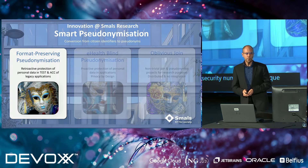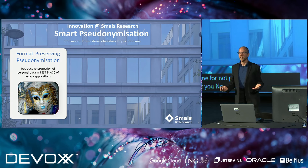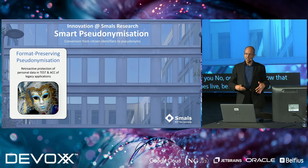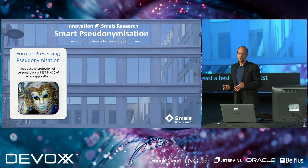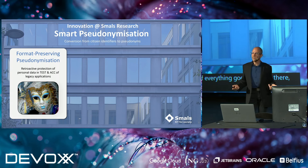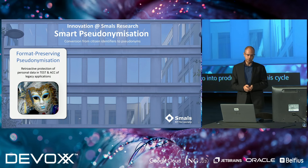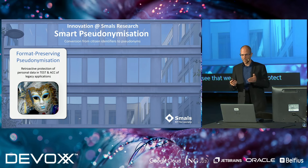Let's start with the first one: format-preserving pseudonymization. Most of you know that before an application goes live, before it goes into production, it passes at least a test phase in a test environment, an acceptation phase in an acceptation environment, and then if everything goes fine, only then we go live. This cycle is repeated with each update of the application. With format-preserving pseudonymization, we can better protect personal data used in test and acceptation environments.